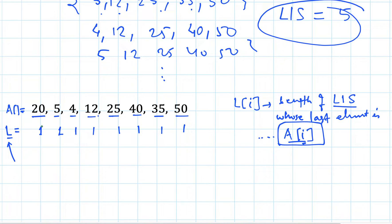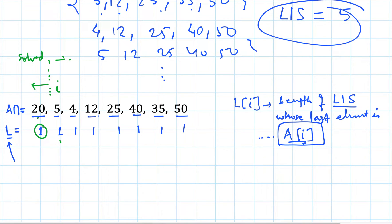We will need two pointers. For element 20 we cannot do better because there is no element before it, so L[0] = 1 is final. Now for element 5, we keep pointer i here and look for all elements before i using pointer j. We check: 20 is more than 5, so we cannot append 5 after 20. There are no smaller elements before 5, so L[i] stays 1. We are now done up to this point.